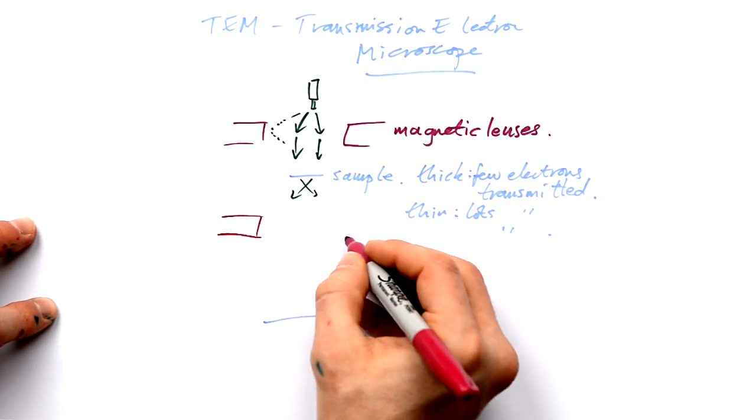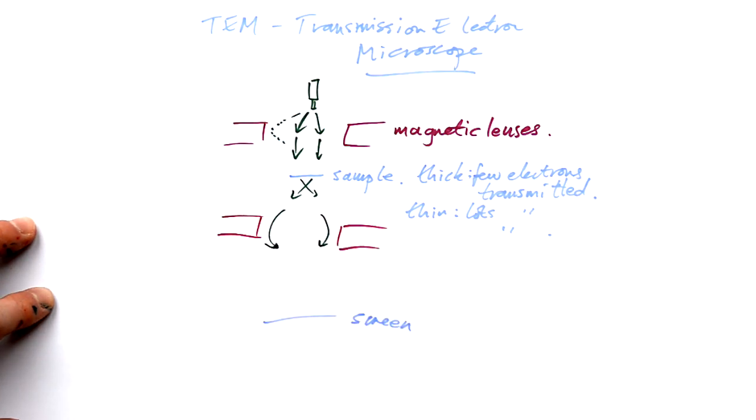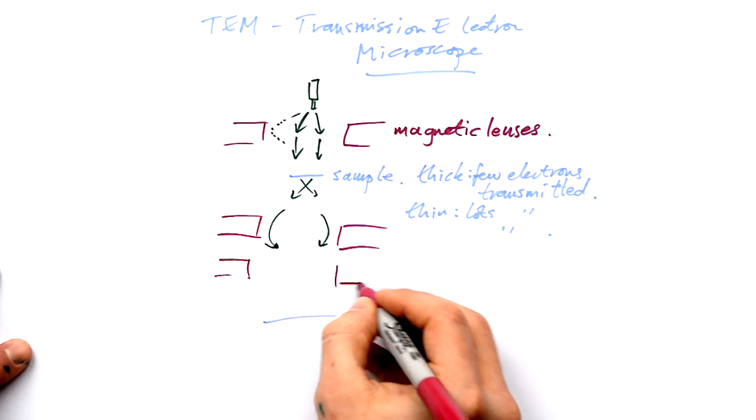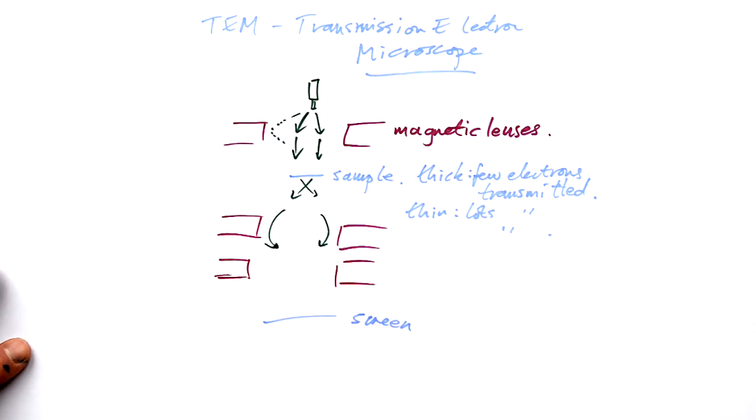So to counteract this, we have another set of lenses to again deflect the electrons. So the electrons from each part of the sample end up at the same point on the screen. Now we do have one more set of lenses as well, just to flip the image as it were, and to project it onto the screen. We're going to forget about this last set of lenses here.